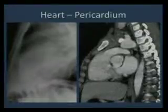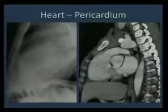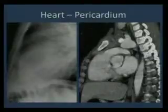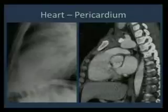The pericardium can sometimes be seen on the lateral view as a linear opacity surrounded by epicardial fat and mediastinal fat, measuring approximately 2 mm. A linear opacity greater than 3–4 mm should raise suspicion for pericardial effusion or pericardial thickening.